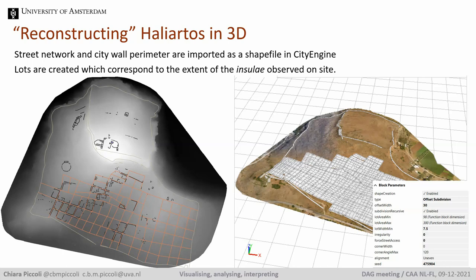A digital elevation model of the hill has been created from drone images. Similarly to Koronia, our aim at Haliertos is to explore various reconstruction hypotheses about the extent of the hill covered by housing quarters, which will help us think about population figures and the relation of the city with its countryside. The surface remains at Haliertos are more preserved and legible than at Koronia, and the fact that the ancient city was destroyed by the Romans during the Third Macedonian War in 171 BC gives us a clear caesura in the urban phases.